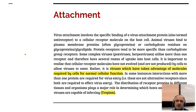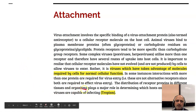Receptor binding has an ecological and evolutionary advantage as the viruses become very host-specific and can propagate only in a specific host. It has an evolutionary disadvantage in that it does not allow the virus to multiply or infect multiple hosts. This property is defined as tropism.